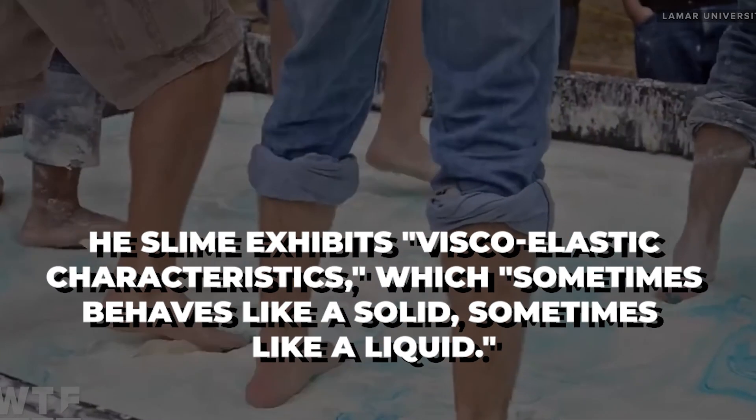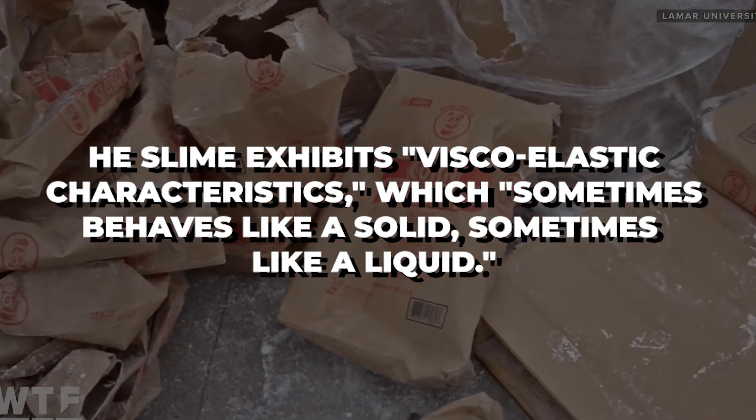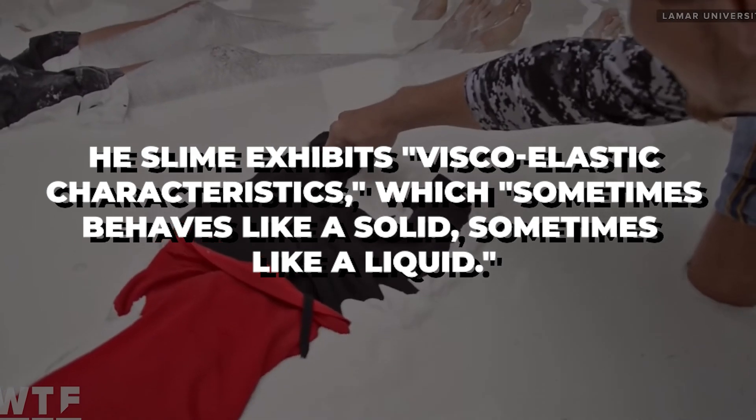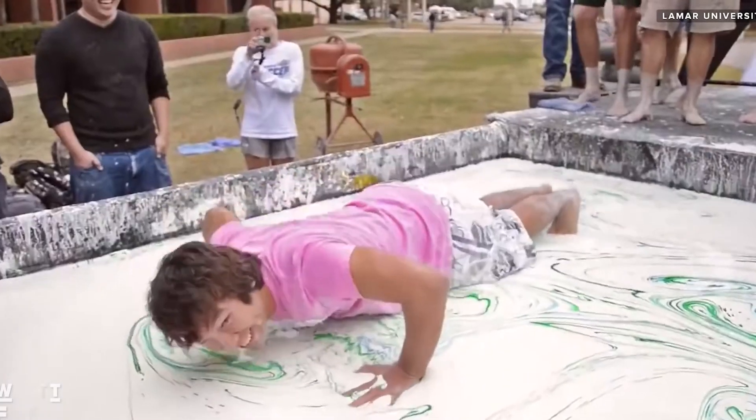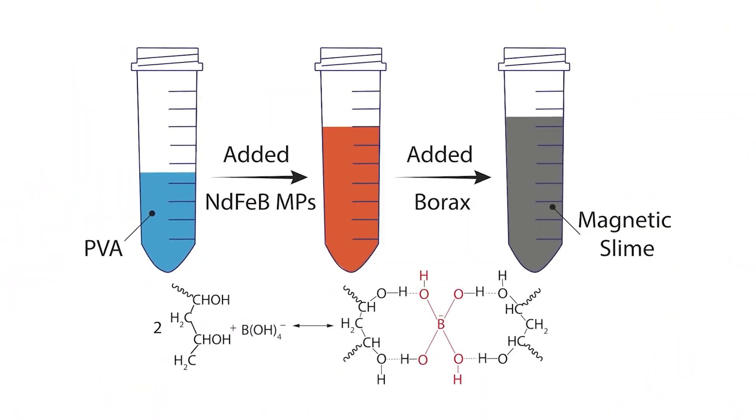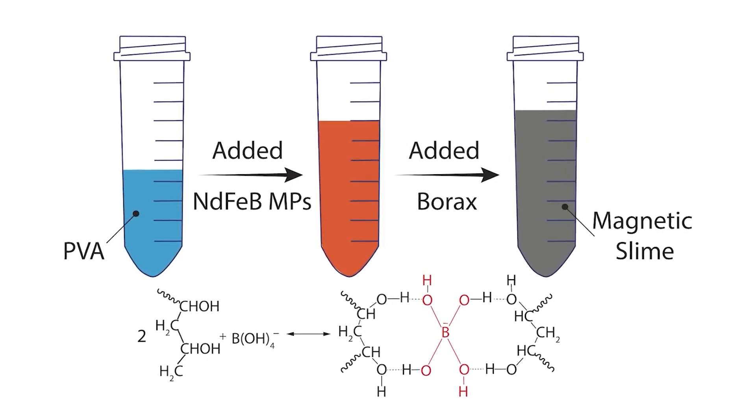According to Zhang, the slime exhibits viscoelastic characteristics, which sometimes behaves like a solid, sometimes like a liquid. It is composed of a polymer known as polyvinyl alcohol, borax, a common ingredient in cleaning goods, and neodymium magnetic particles. It's similar to mixing water and corn starch at home, Zhang explained.